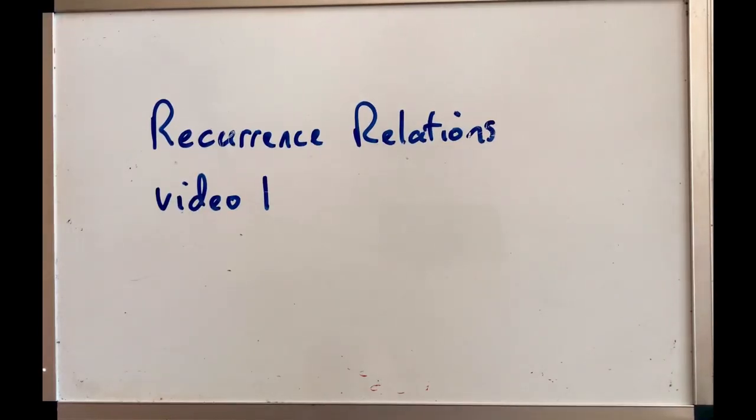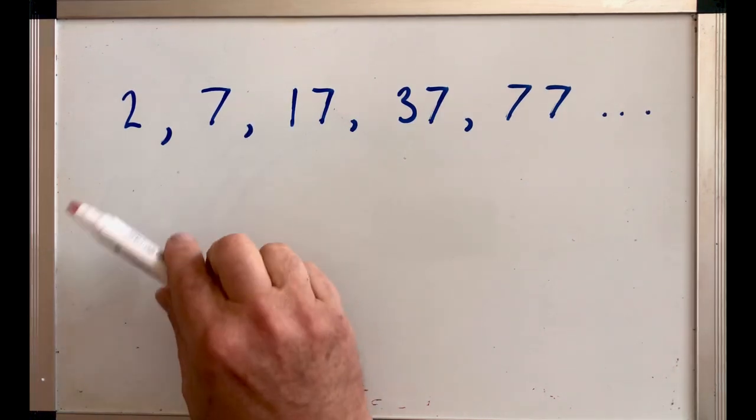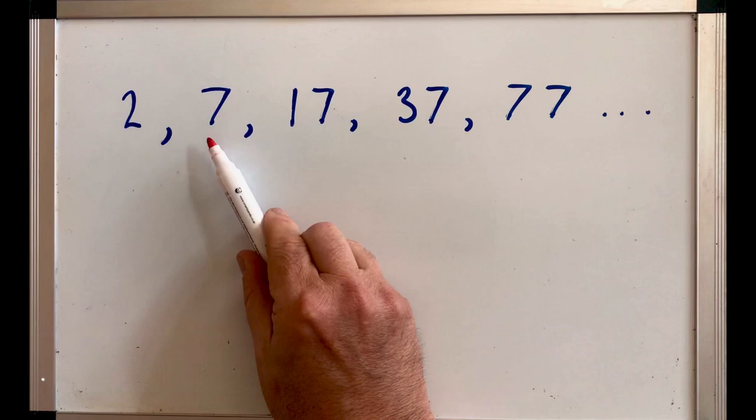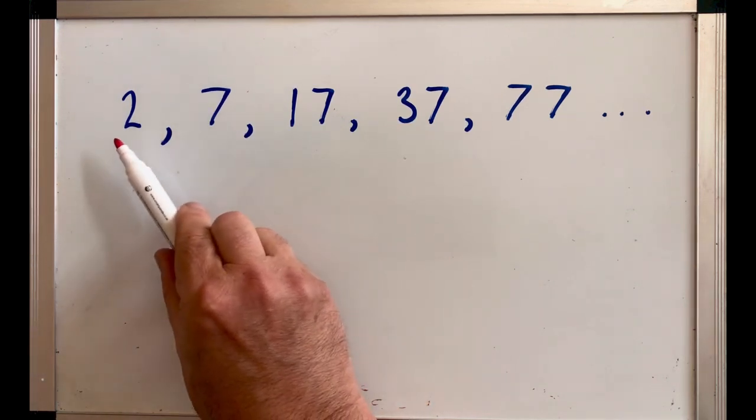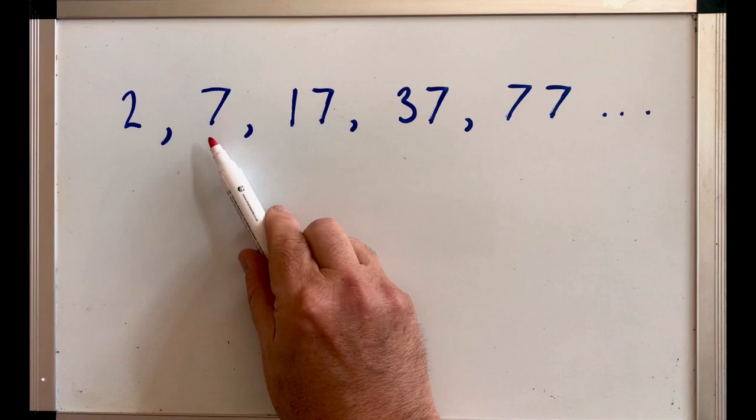This is the first of two videos about recurrence relations. We're looking at a sequence which involves a linear recurrence relation. That means that the connection between one term in the sequence and the next is connected by a linear formula, that is, multiplying by something and either adding or subtracting by something.